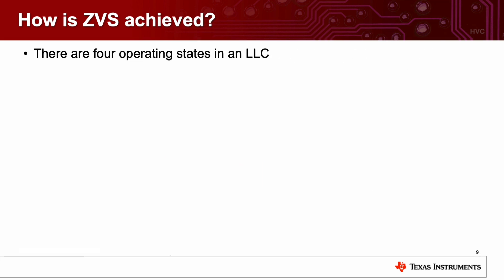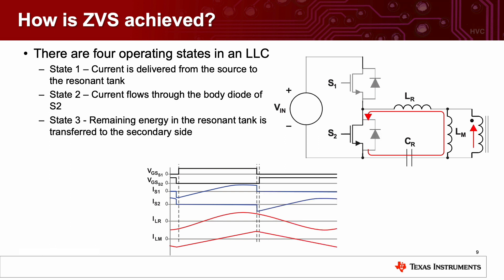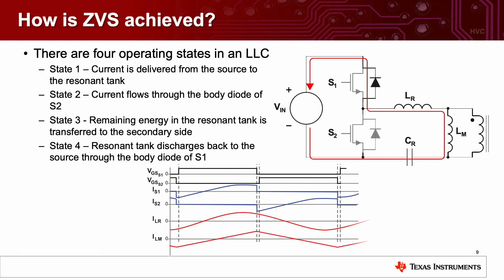How is ZVS achieved? There are four operating states in an LLC. State one, current is delivered from the source to the resonant tank. In the second state, current flows through the body diode of S2. In state three, the remaining energy in the resonant tank is transferred to the secondary side. In the final state, the resonant tank discharges back to the source through the body diode of S1. And this cycle continues to repeat.